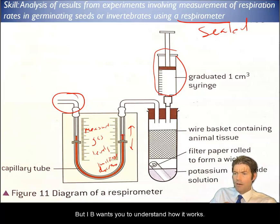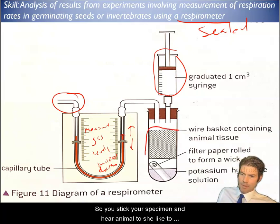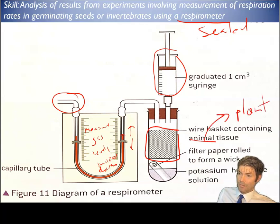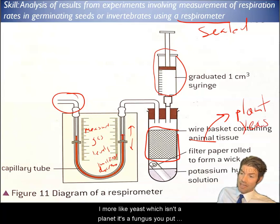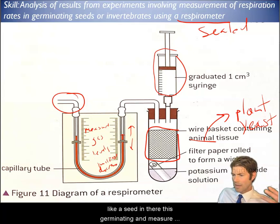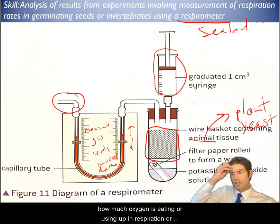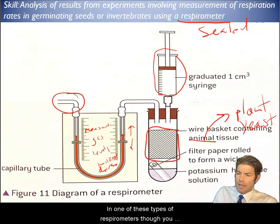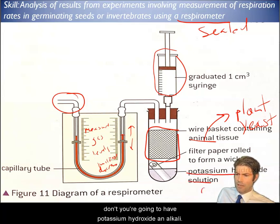We won't be using these - we'll just use a direct sensor. This is kind of an older style way to do it, but IB wants you to understand how it works. So you stick your specimen in here - animal tissue like we talked about. We're not going to use animals, we're going to use plant tissue or yeast, which isn't a plant, it's a fungus. You put like a seed in there that's germinating and measure how much oxygen it's eating or using up in respiration.